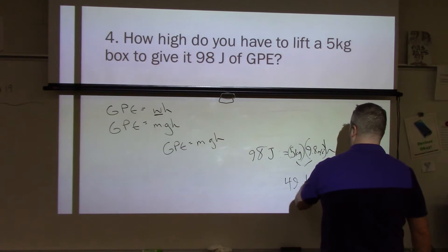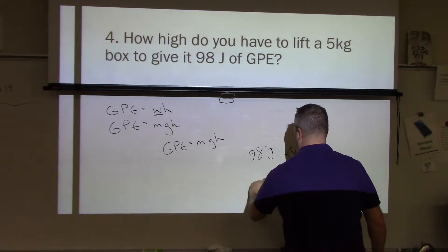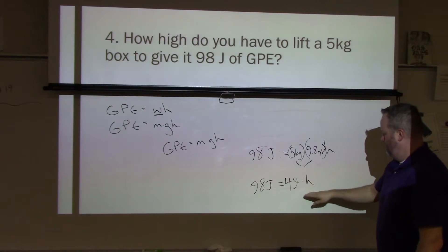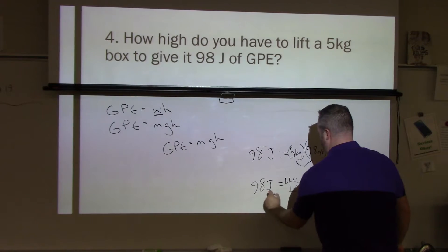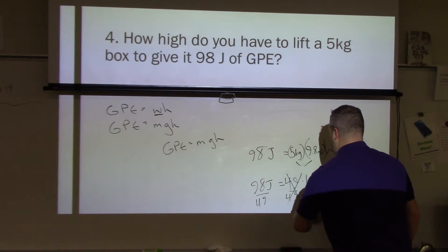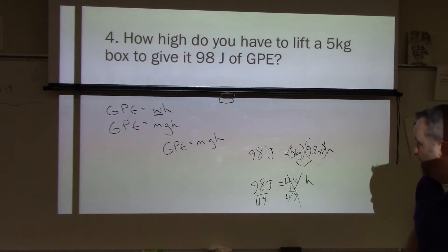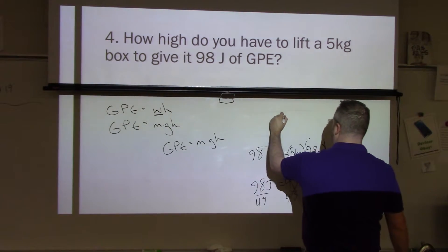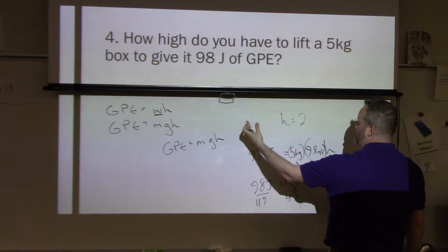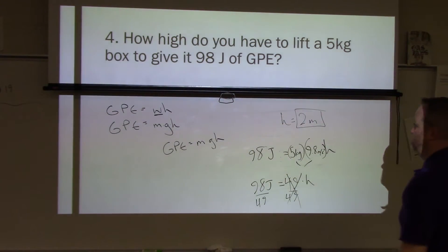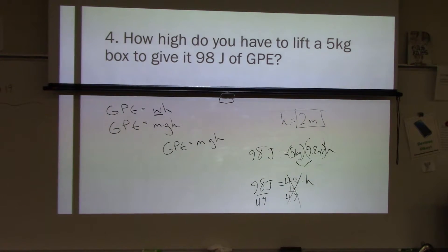So 49 times height equals 98 joules. So now I need to isolate the variable, and to do that I'm going to divide both sides by 49. Those cancel out. And then 98 divided by 49 is going to give me 2. So here, H equals 2. Remember we're using SI units, so 2 is going to be 2 meters. So the height must be 2 meters in order to have that much energy.